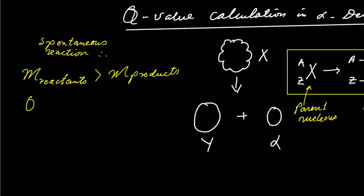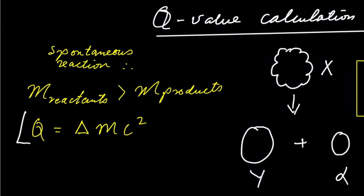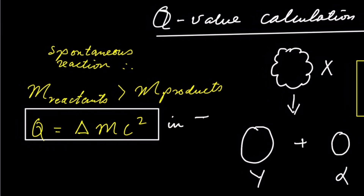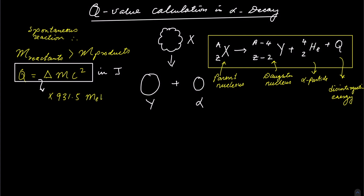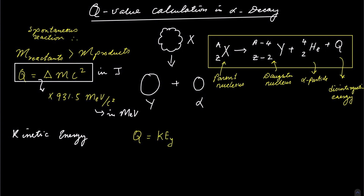We can calculate the Q value by taking the rest mass energy difference between the products and reactants, multiplying by c squared, giving a final answer in joules. You can multiply Q by 931.5 to convert it to mega electron volts. Now let's look at the kinetic energy of the daughter nucleus and the alpha particle. The sum of the two also gives the Q value — that is the second way of calculating Q.